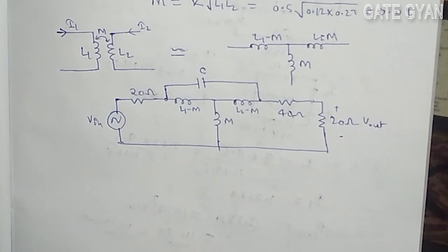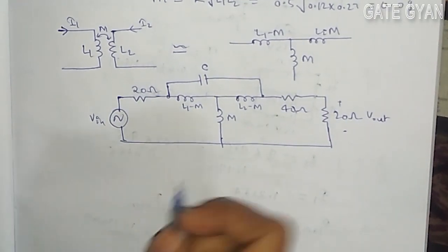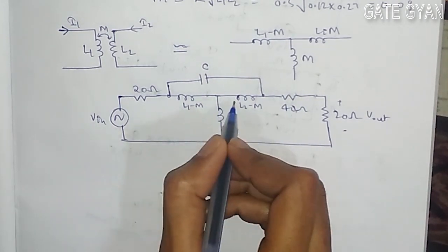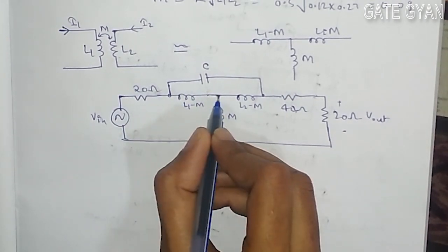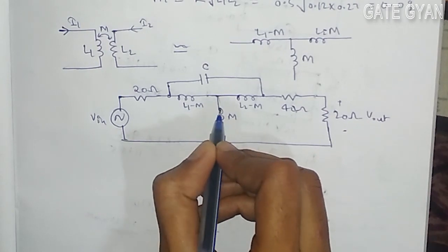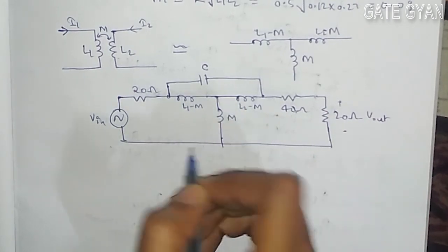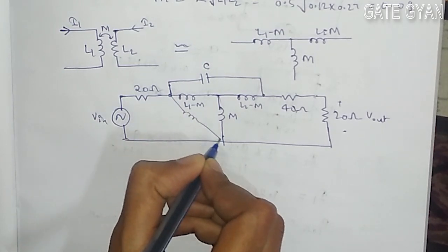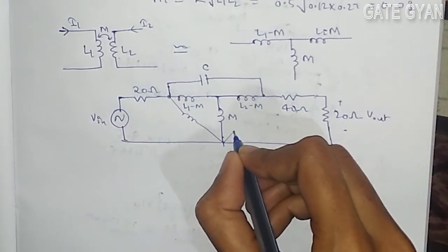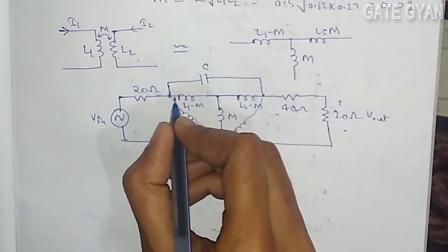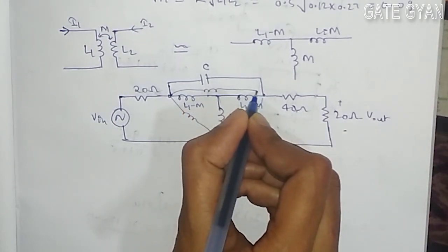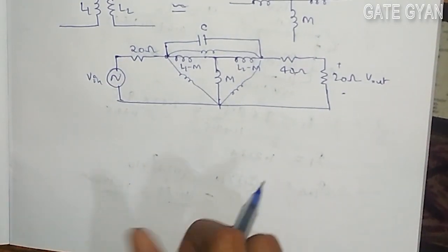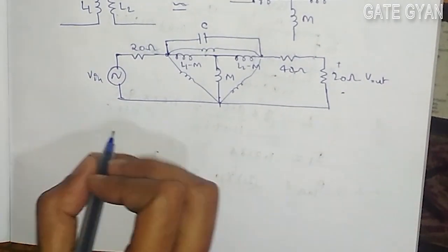Now I can convert this. This is in delta and star formation. This is my T network or star network of inductance. So I can convert into delta. So how my delta will look like? Here also in the picture, I will reconvert into delta. So how the circuit will look like?